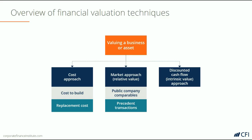Finally, we have discounted cash flow analysis, which is a form of intrinsic value. Intrinsic value means we look at the company in isolation — we don't look at what other companies are worth or the cost approach. Instead, we forecast the future performance of the business, typically about five years, then assume a sale of the company or a perpetual growth rate to give us a terminal value. That forecast is then discounted back to today using a discount rate, typically the weighted average cost of capital.